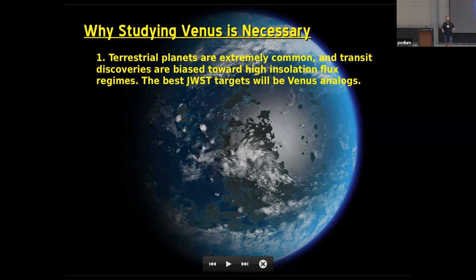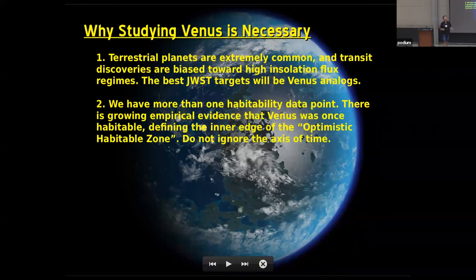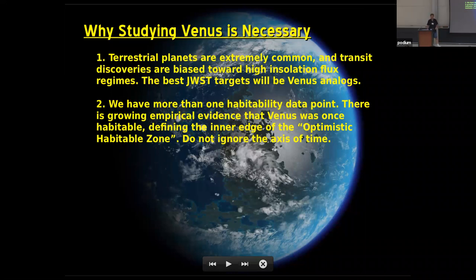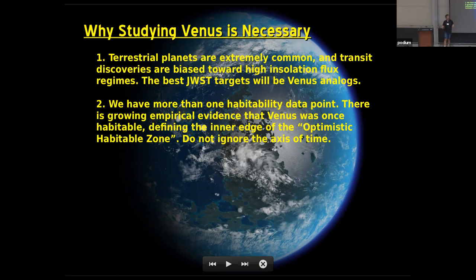Trying to understand that divergence between the Jekyll and Hyde of our solar system is very important. And often you'll hear that when talking about habitability, we only have one data point. I don't think that's a true statement, because there is growing evidence that Venus did go through a temperate period — which could have lasted until as recently as about 0.7 gigayears ago. It's intriguing to think that if we observed our solar system as an exoplanetary system at three gigayears old, we may have concluded there are two habitable planets in the system. Defining where the boundaries of habitability are is just as important, if not more important, than defining the middle — we know where the middle is, we're standing on it.